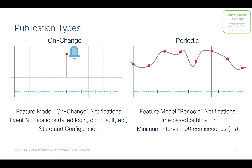Now, there's a couple of different options that we have when we push the telemetry — either on-change or periodic. Most of the examples that you're going to see here are for periodic telemetry, meaning it's going to push out the telemetry data on a time-based publication. And today we're supporting a minimum interval of every one second, so we can go as granular as pushing data out every one second.